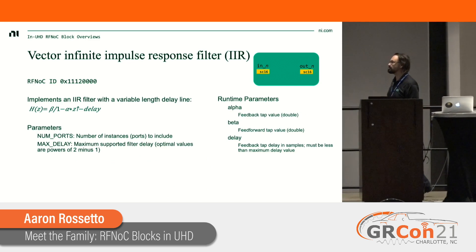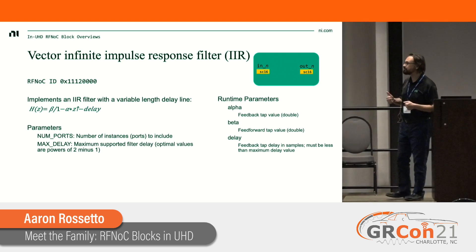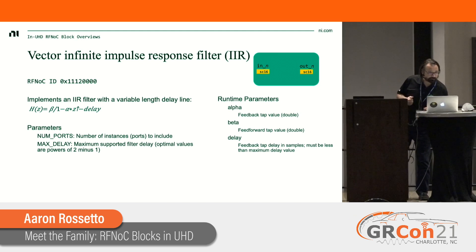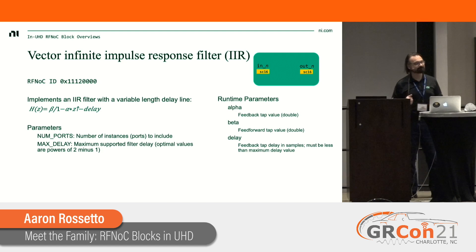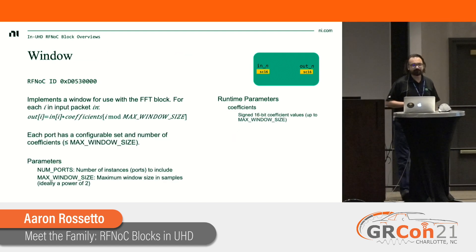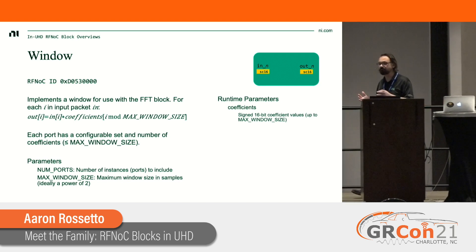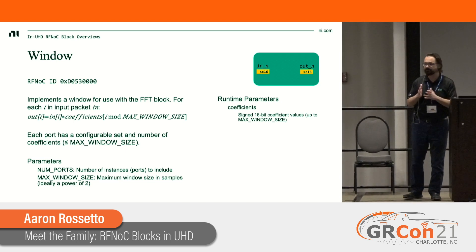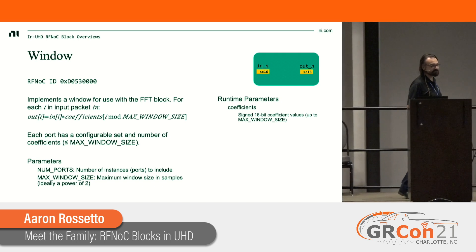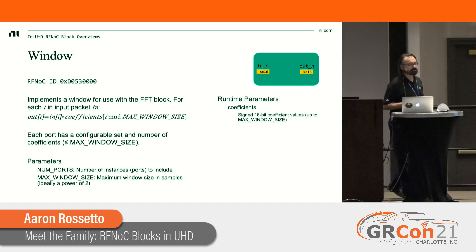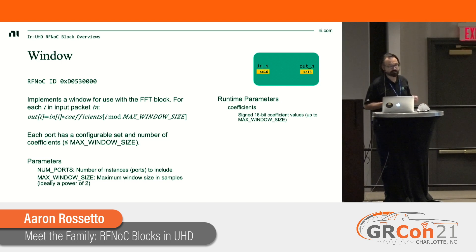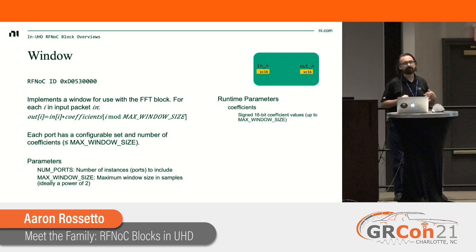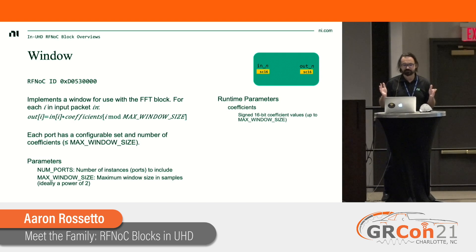There's also an IIR filter implementing a variable-length delay line with runtime-configurable alpha, beta, and delay parameters. And then there's a standard window function, typically used before an FFT. It multiplies each input sample by the window coefficients and outputs the result. You can set the maximum window size in samples — ideally a power of two — which controls the number of registers used to store the coefficients.